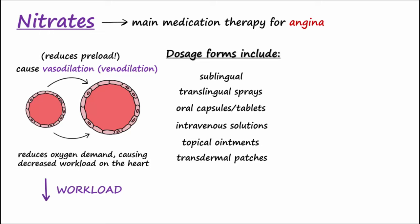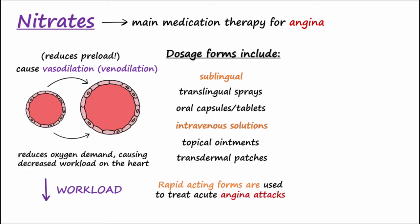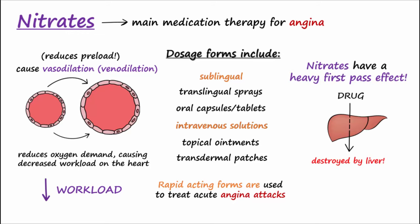The rapid-acting forms, such as sublingual and IV, are used for acute anginal attacks. If given orally, nitrates can have a heavy first-pass effect and be largely destroyed by the liver before they even reach systemic circulation. For this reason, sublingual is the preferred route to treat acute angina attacks in the outpatient setting, as they have a rapid onset of action.